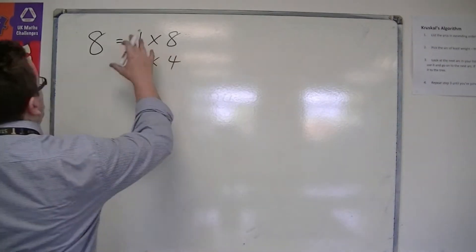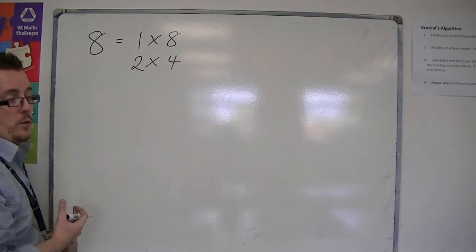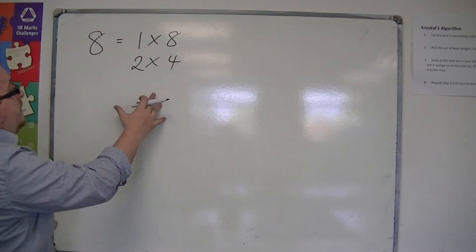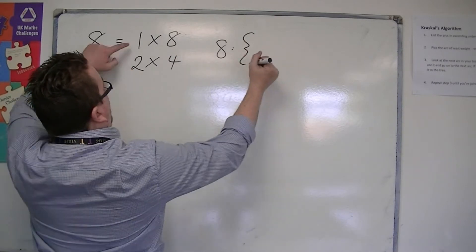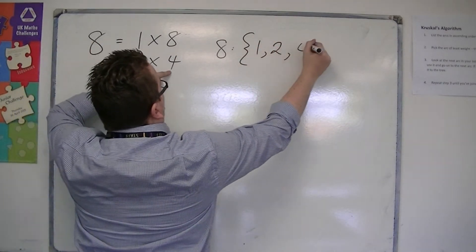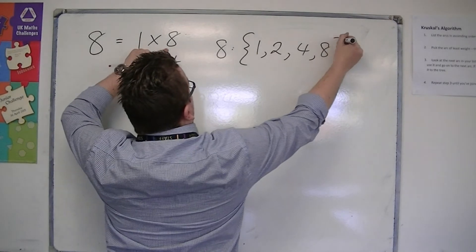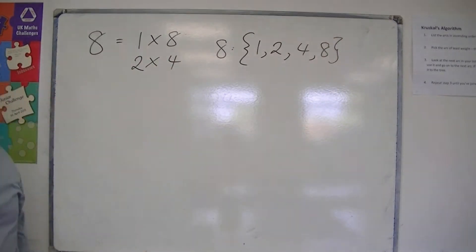And then, once you've got the two different ways that we could get 8, then the factors of 8 are 1, 2, 4, and 8. It could be read in a list.